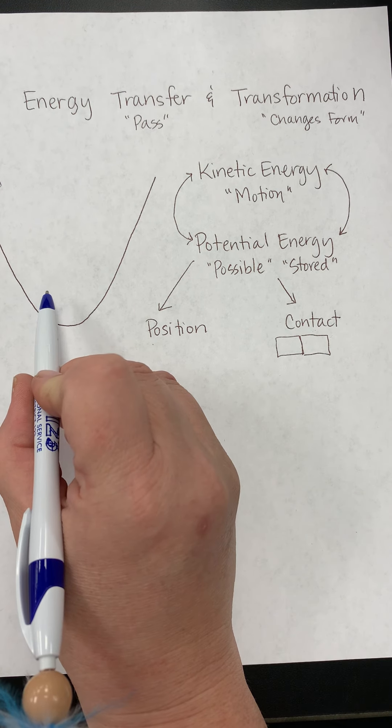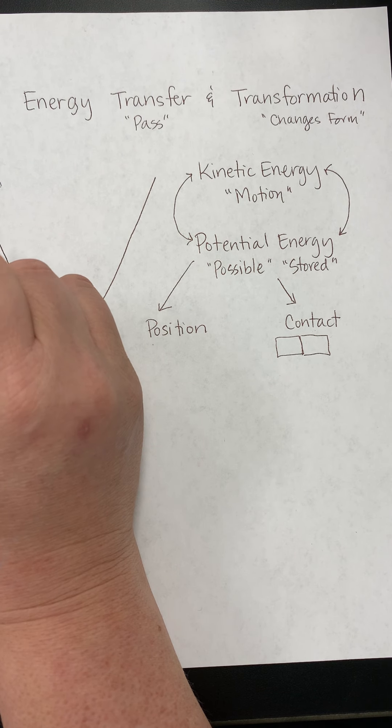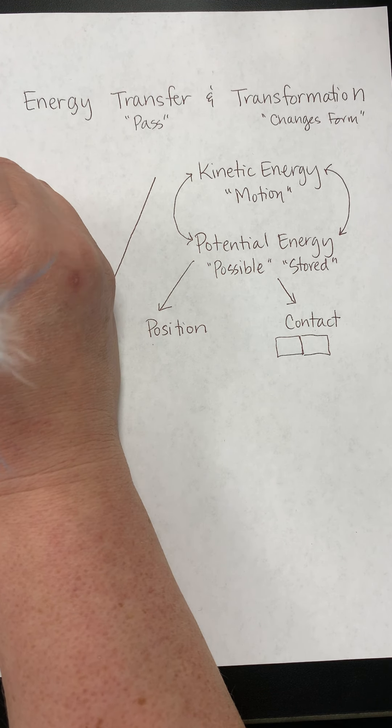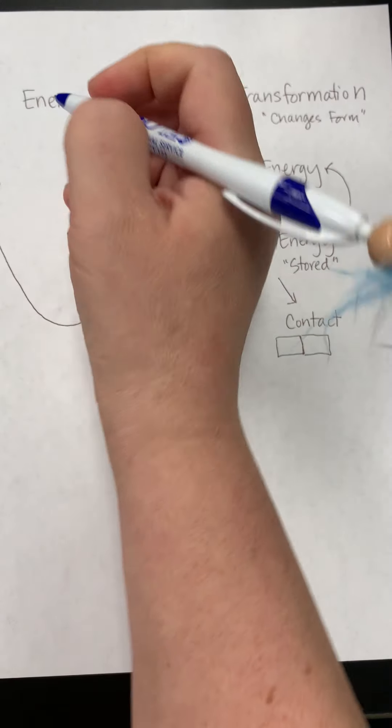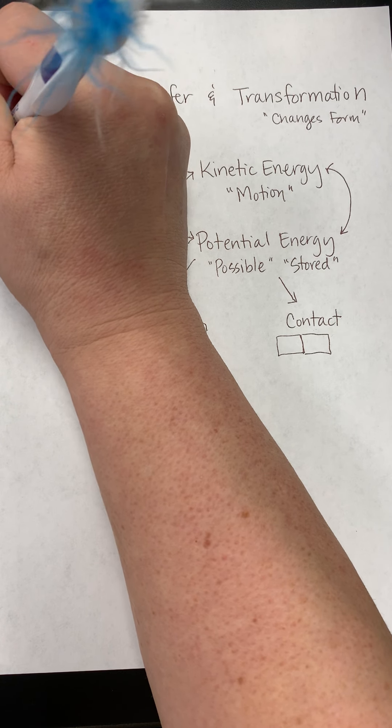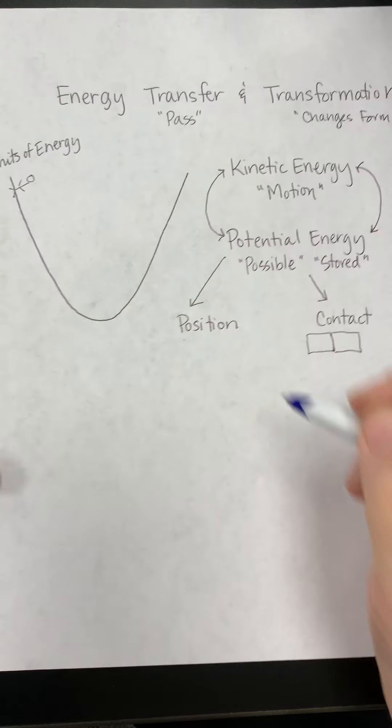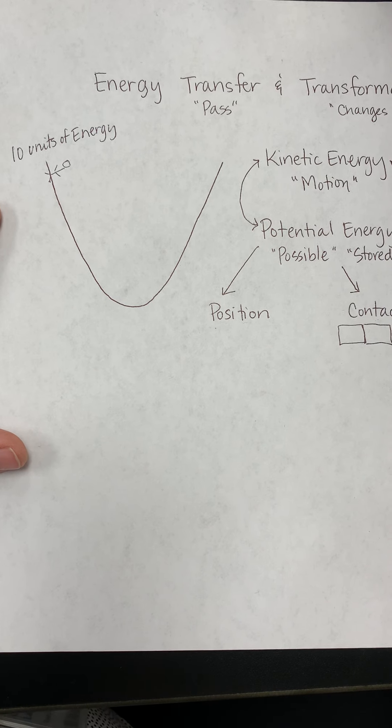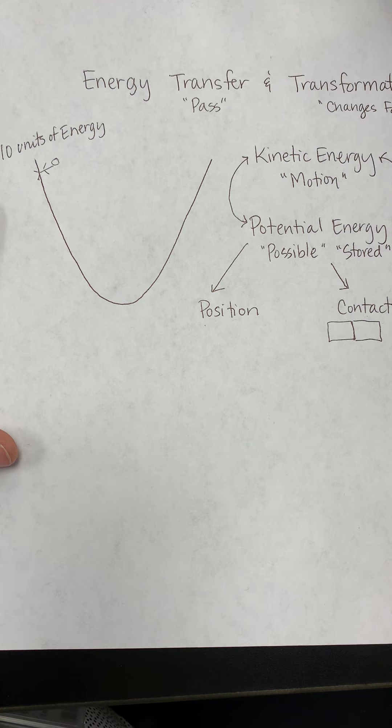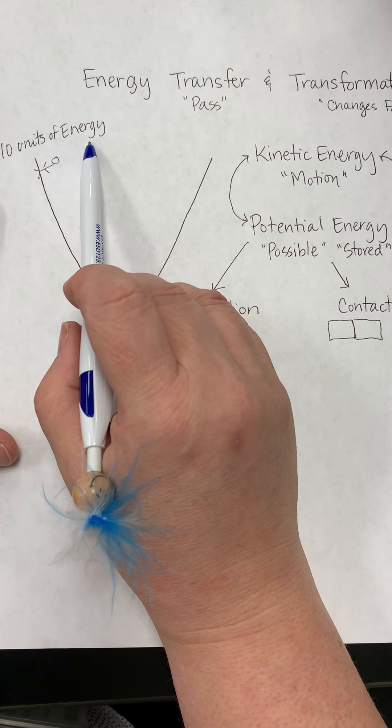So, if we look at this skate park analogy, when the skateboarder is starting, if we have, say, let's say we have 10 units of energy. Now, energy, remember, is not matter. However, sometimes it can be helpful to think about it as a numerical value. Okay, so I have these 10 units of energy.